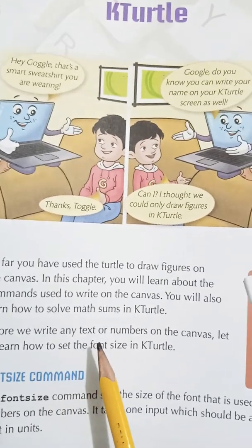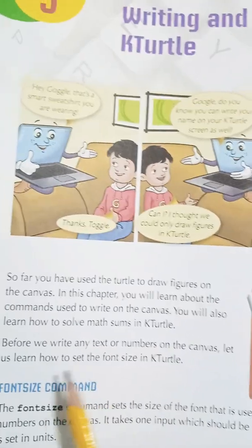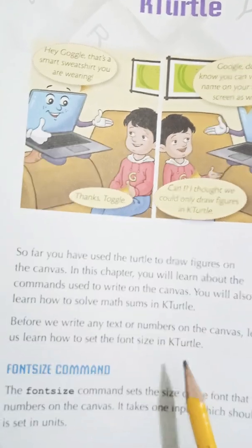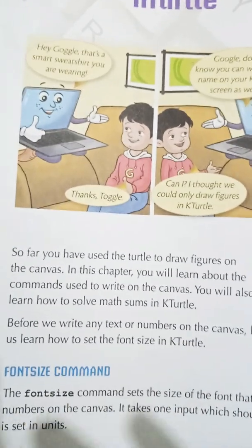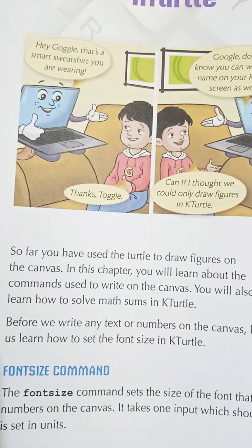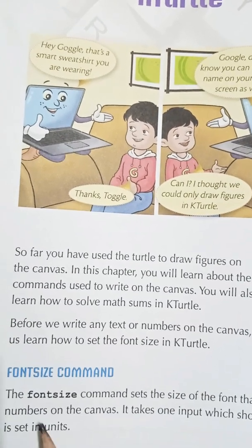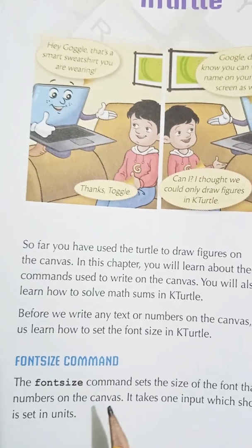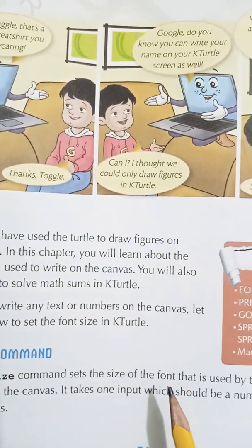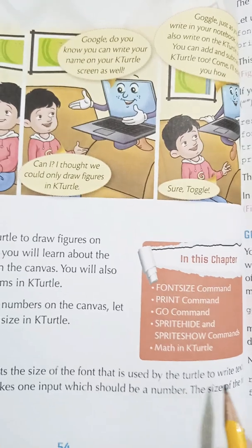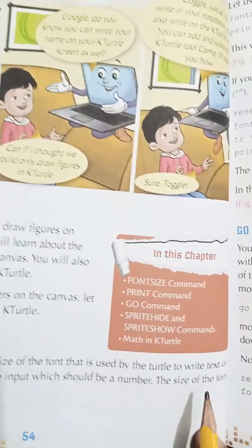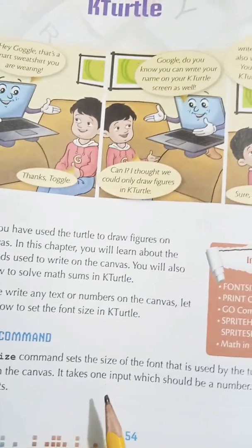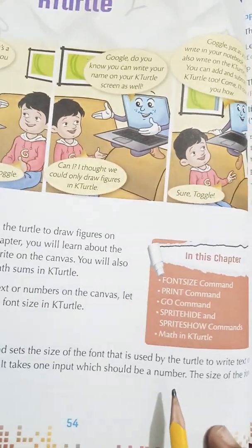Before we write any text or numbers on the canvas, let us learn how to set the font size in K-Turtle. The font size command sets the size of the font that is used by the turtle to write text or numbers on the canvas. It takes one input, which should be a number — the size of the font is set in units.